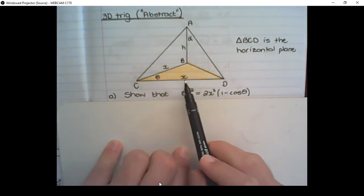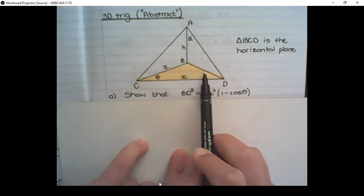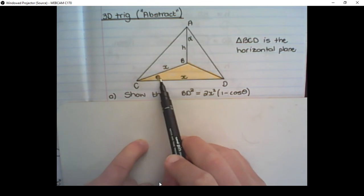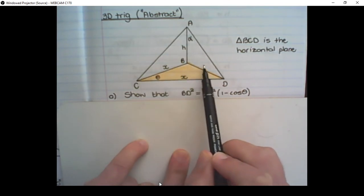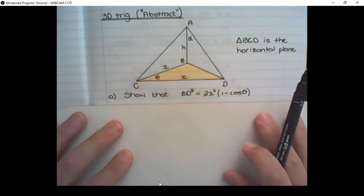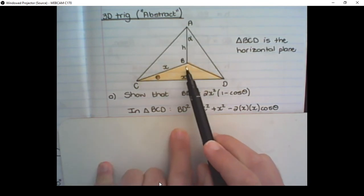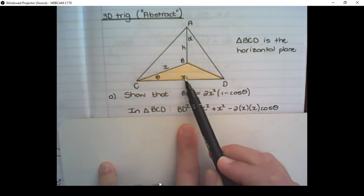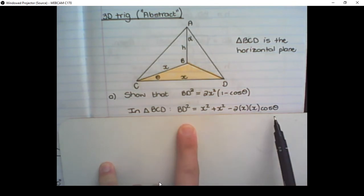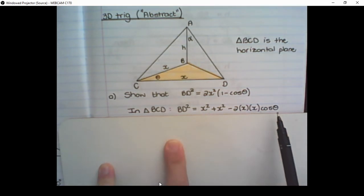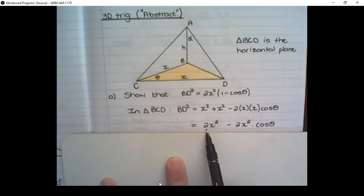In the horizontal plane I can see two lengths of X and the angle theta, with BD opposite the angle theta. Going back to our grade 11 theory, this fulfills the requirements for the cosine rule. So in triangle BCD: BD² = X² + X² − 2·X·X·cos θ. Simplifying, the first two terms are like terms, giving 2X².